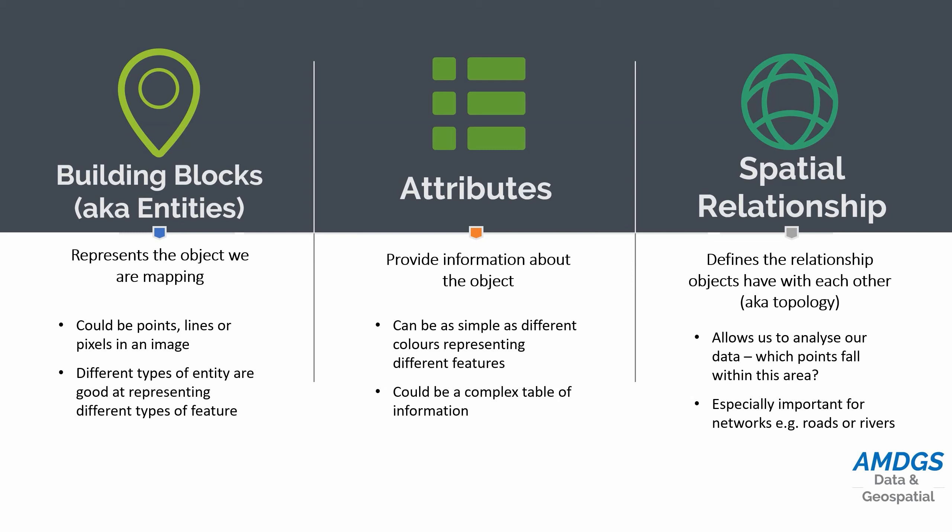These entities could be points, it could be lines if we're showing roads or rivers, it could be areas or polygons if we're showing something like buildings, or it could be what we call pixels — in the same way that we have pixels in a digital photograph — little squares that make up a continuous coverage across an area and can be used to display a range of things from a photograph to height to pollution levels. Different types of entities are good at representing different types of features.